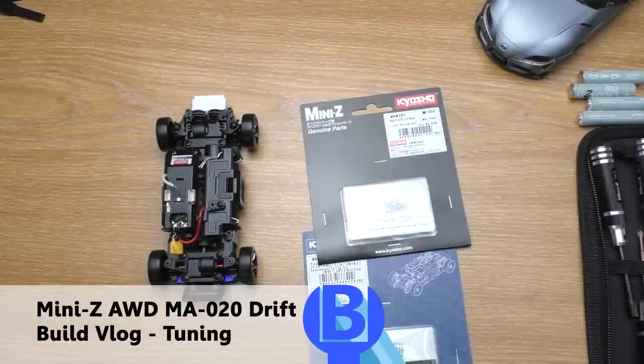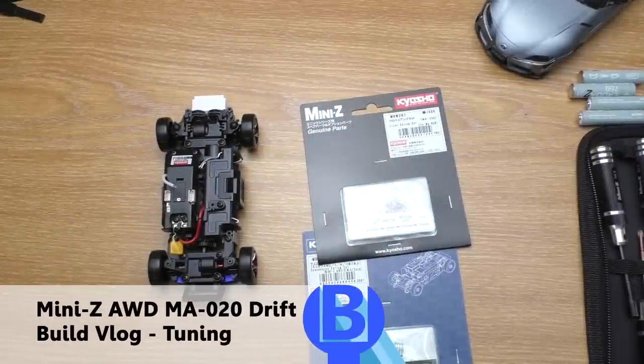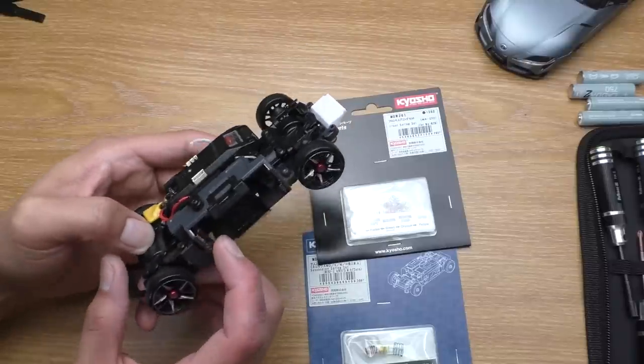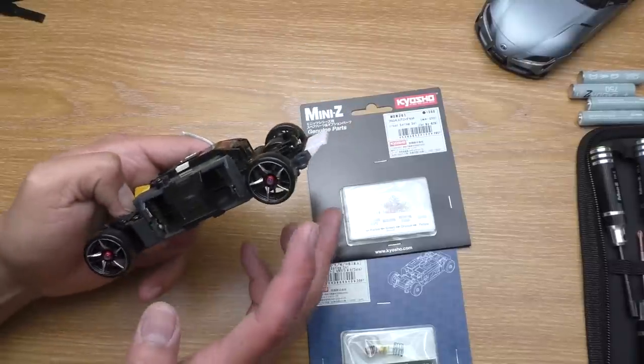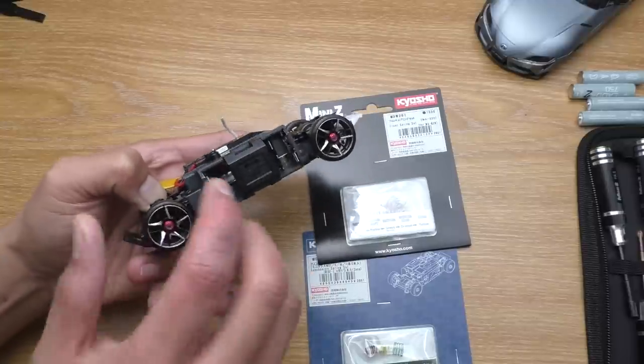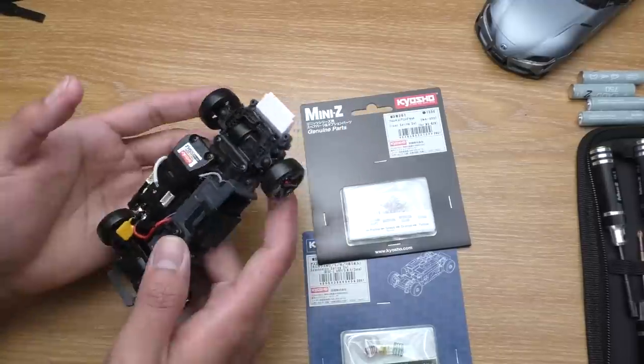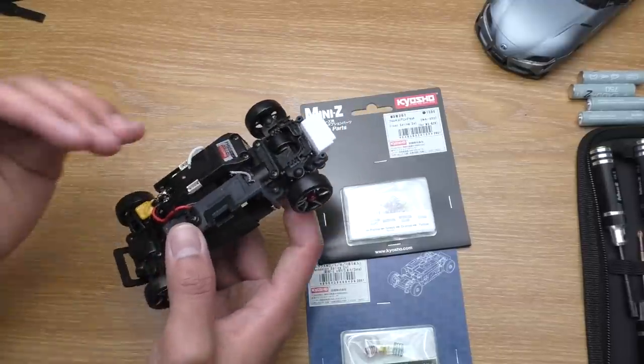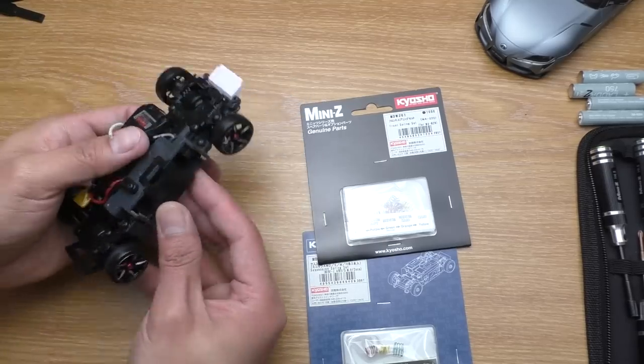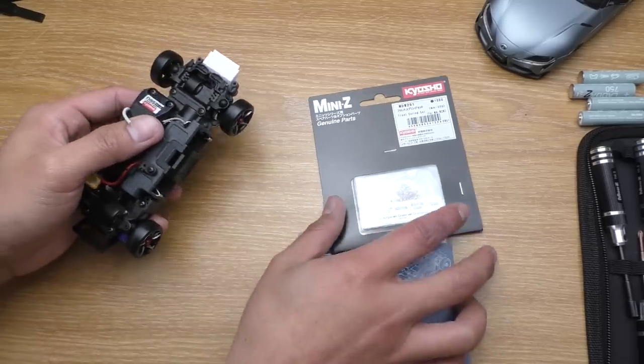Hello everyone, welcome to Beaver's Hobby Channel. Today I'm going to tune my Mini Z all-wheel drive drift car. Let's pick up where we left off last time when I tested the car after installing the front one-way and rear solid axle. It was a great success, however I still have to pull the brake rather aggressively to get it to turn in.